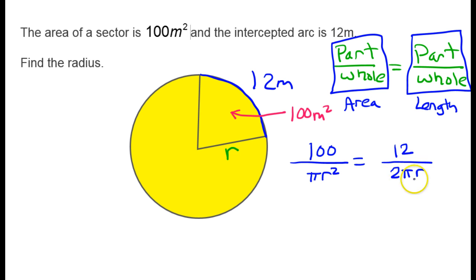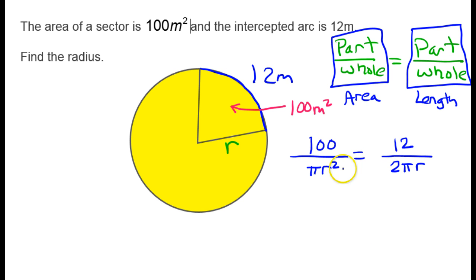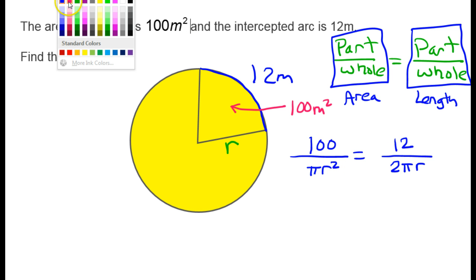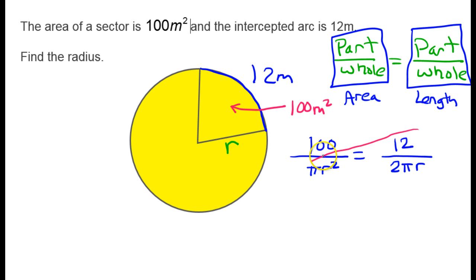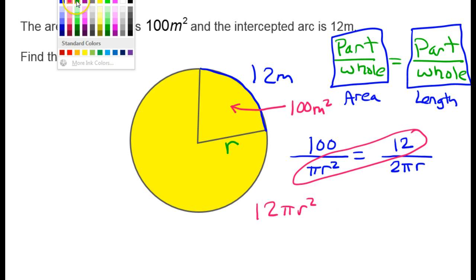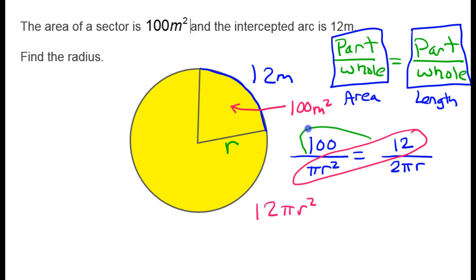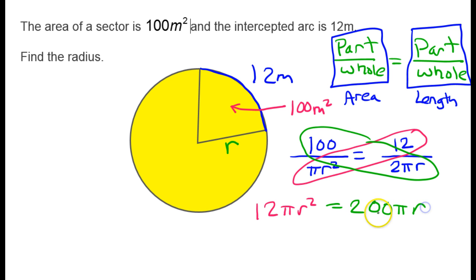So I have part over whole area equal to part over whole length: 100/πr² = 12/2πr. Notice the only variable in this equation is r, and that's what we're supposed to find, so this should be doable. I'm going to cross multiply. That diagonal gives me 12πr², and the other diagonal — 100 times 2 — gives me 200πr.